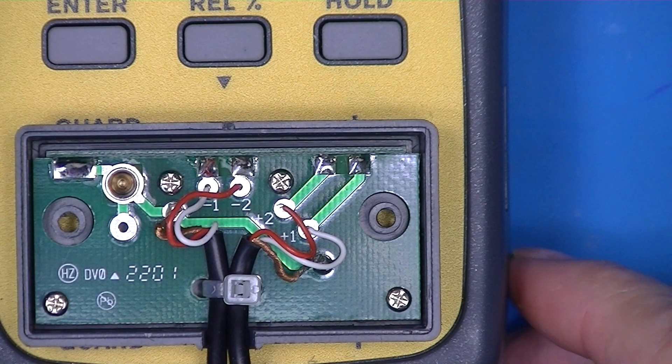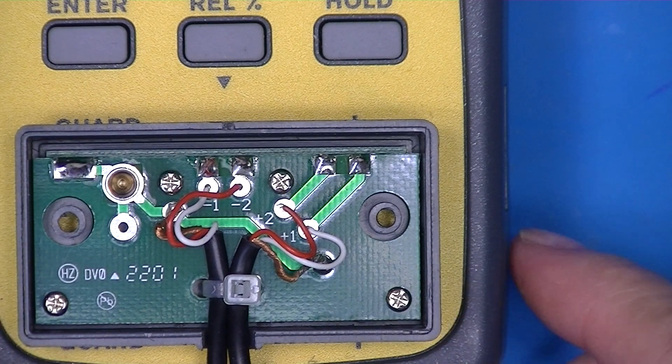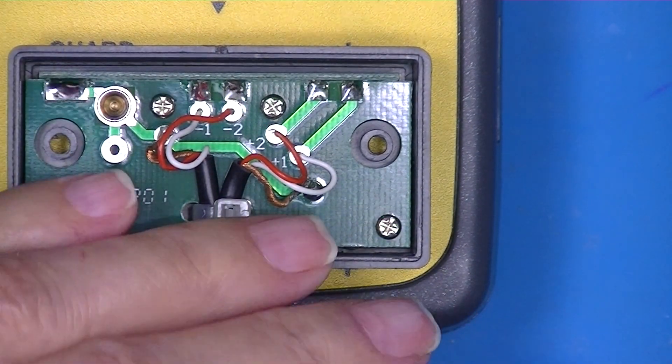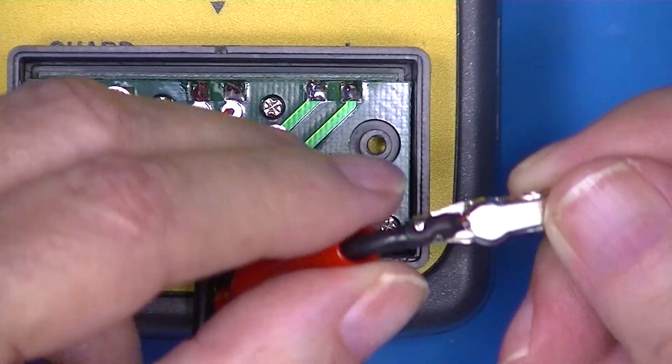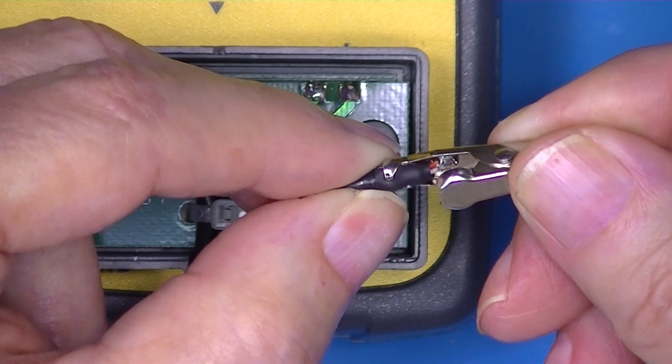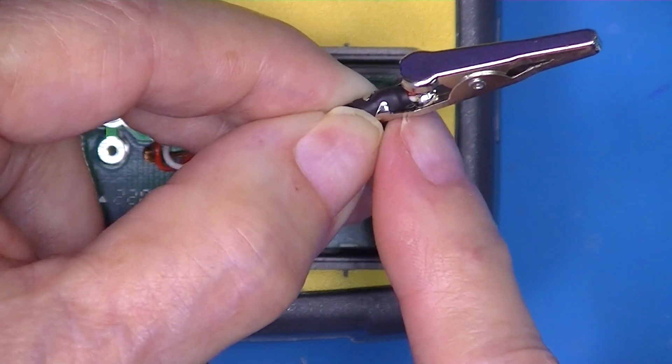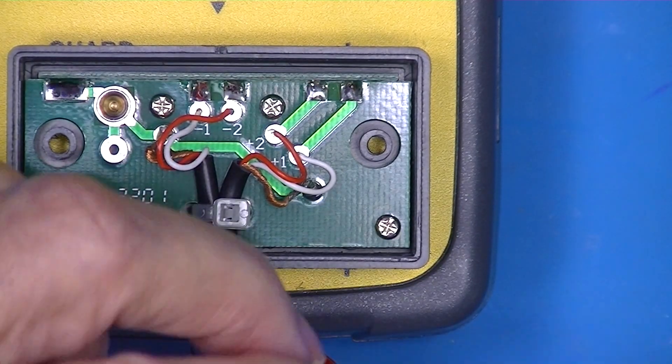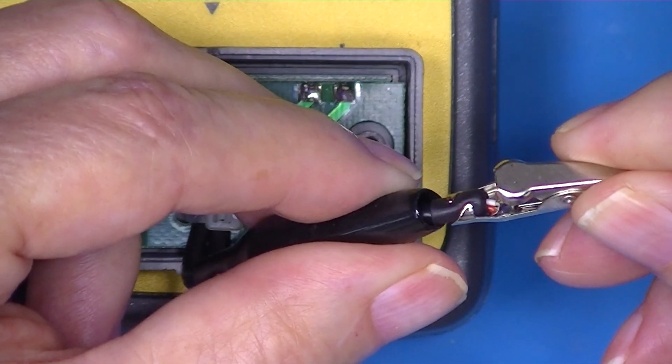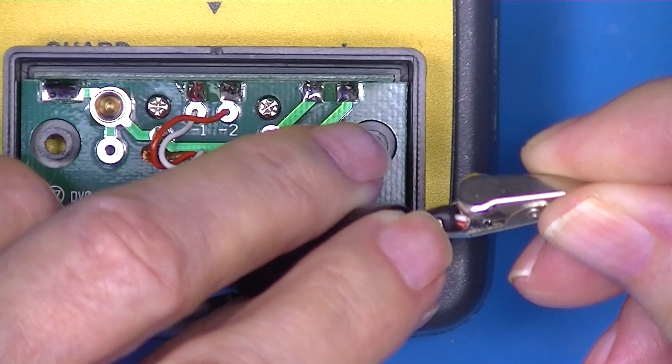Now we can't really measure what's happening here because the red and white wires are connected together and the four wire measurement ends right here, where red and white come together.